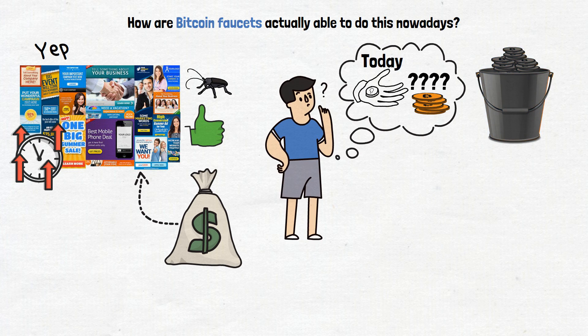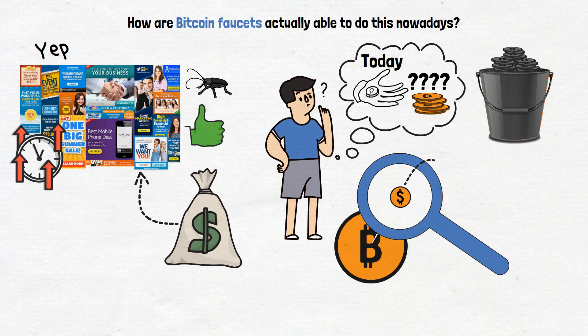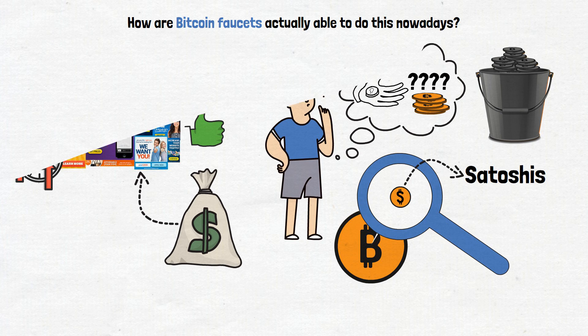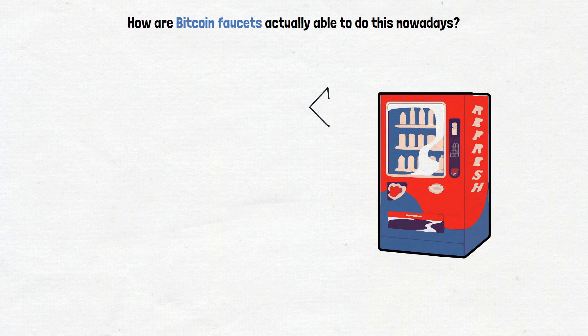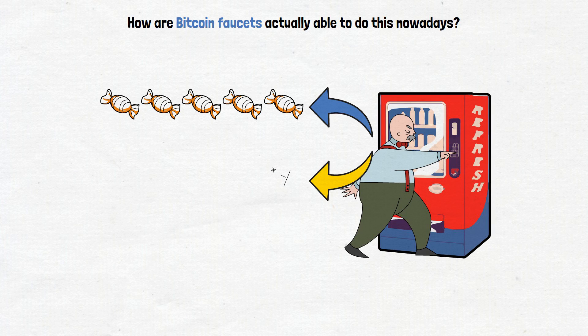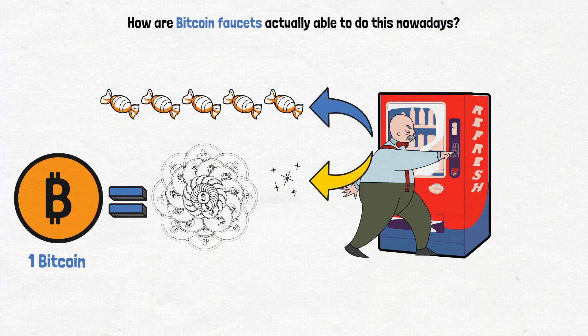It's not buckets full, that's for sure. You'll usually get tiny fractions of Bitcoin, which are called Satoshis. If that vending machine we talked about used to hand out 5 big lumps of candy each time you push the button, it would now give you just some candy dust, because each Bitcoin is made up of 100 million Satoshis. But hey, if you keep collecting that dust, it can still add up over time.